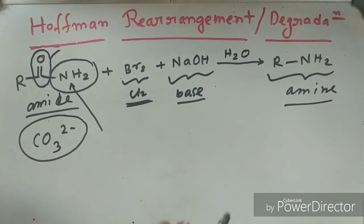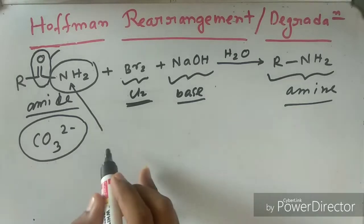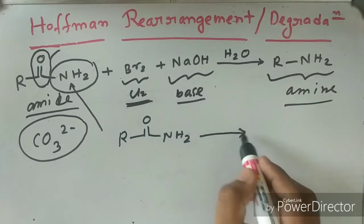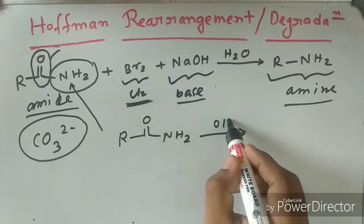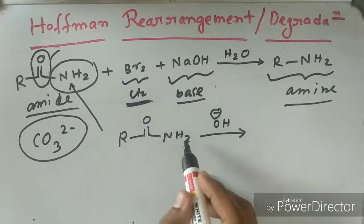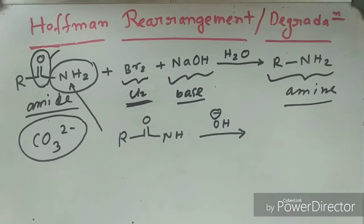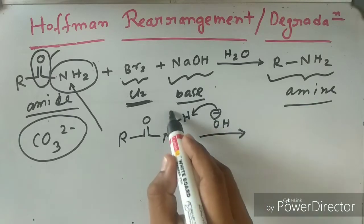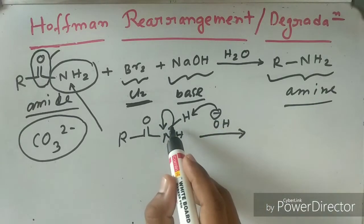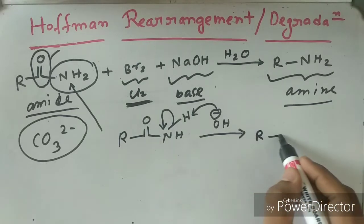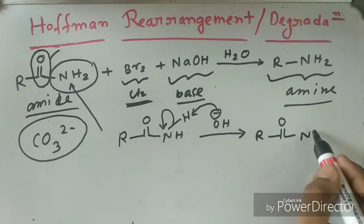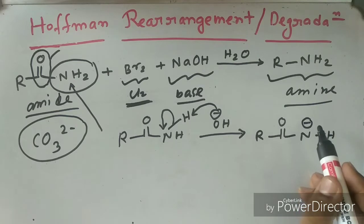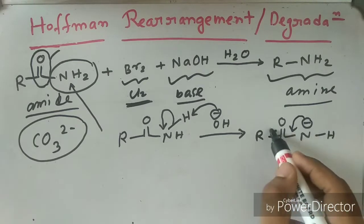So what will be the mechanism for that reaction? First, this is amide, and the base — that is O⁻ from the base — will come and attack one of the hydrogen atoms of the nitrogen. This hydrogen will deprotonate and one negative charge will form on nitrogen, giving us NH with a negative charge, which is resonance stabilized.